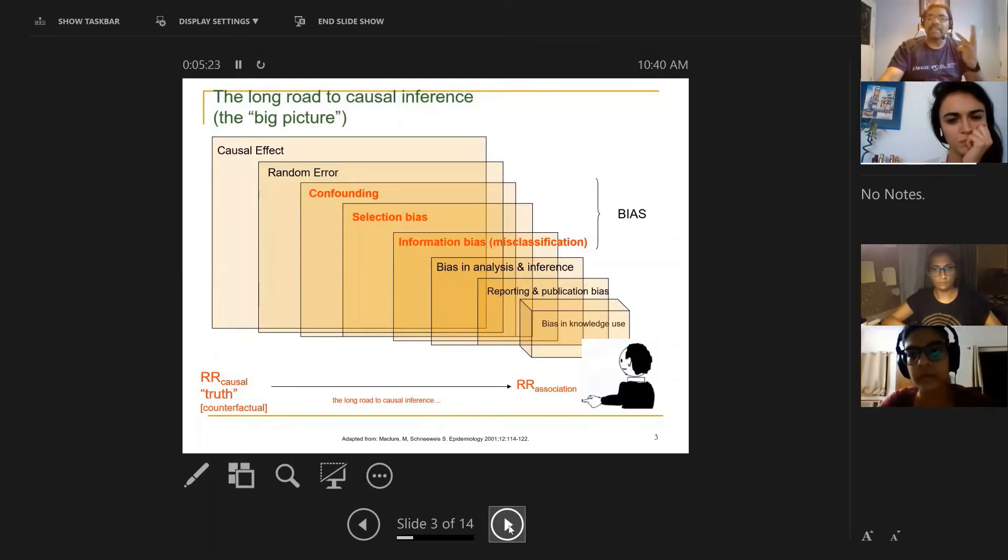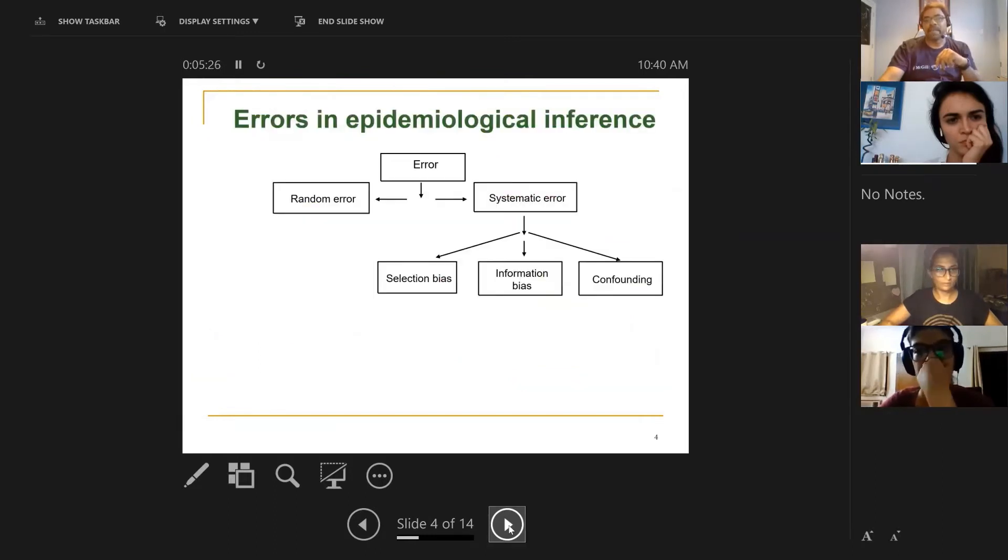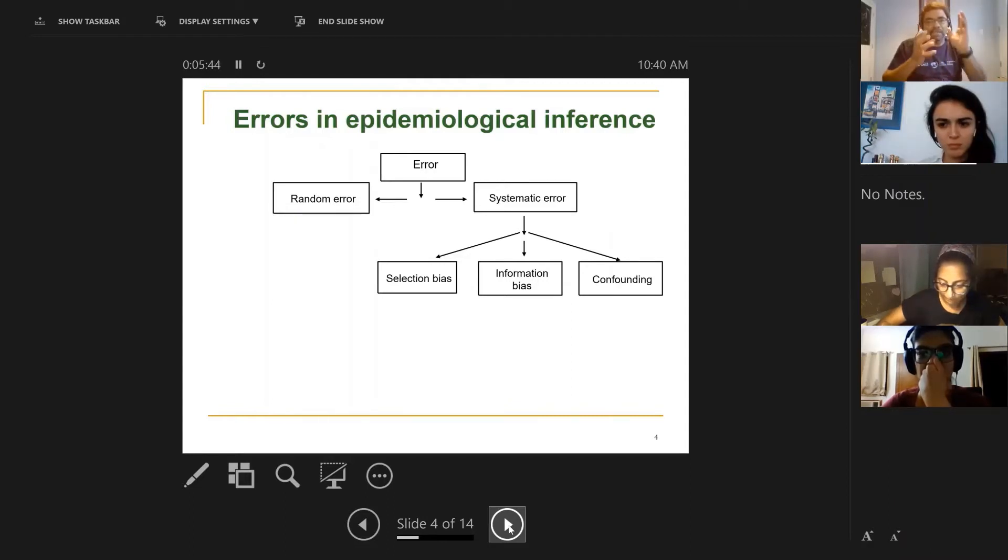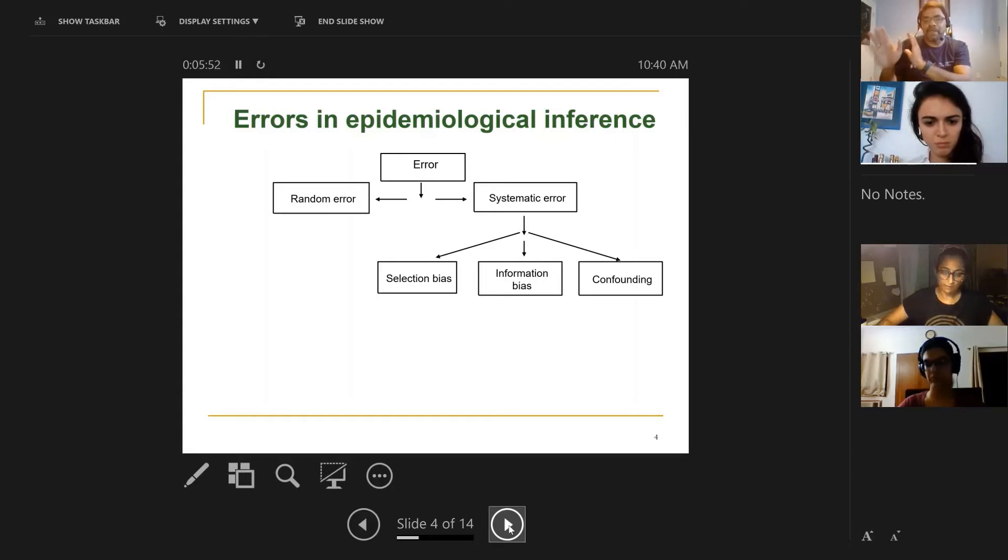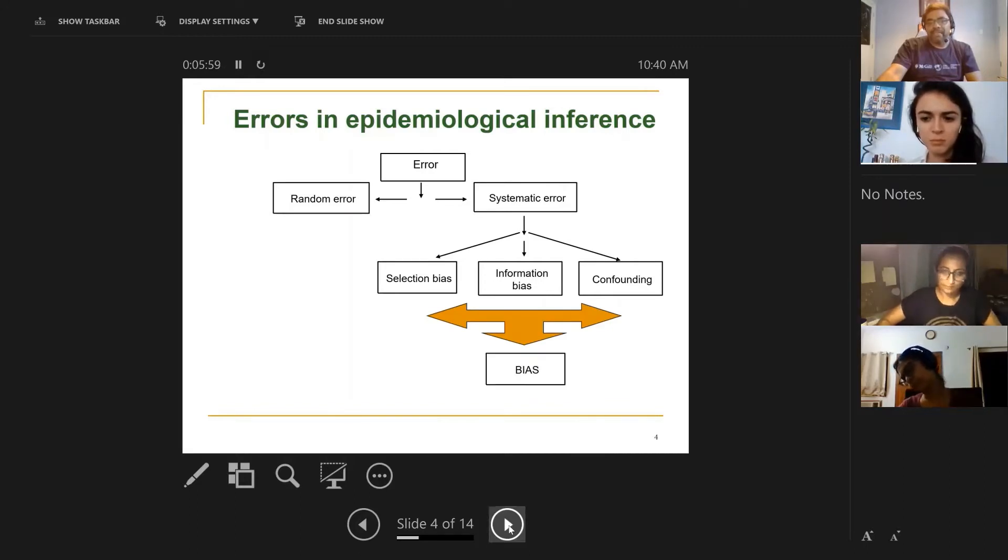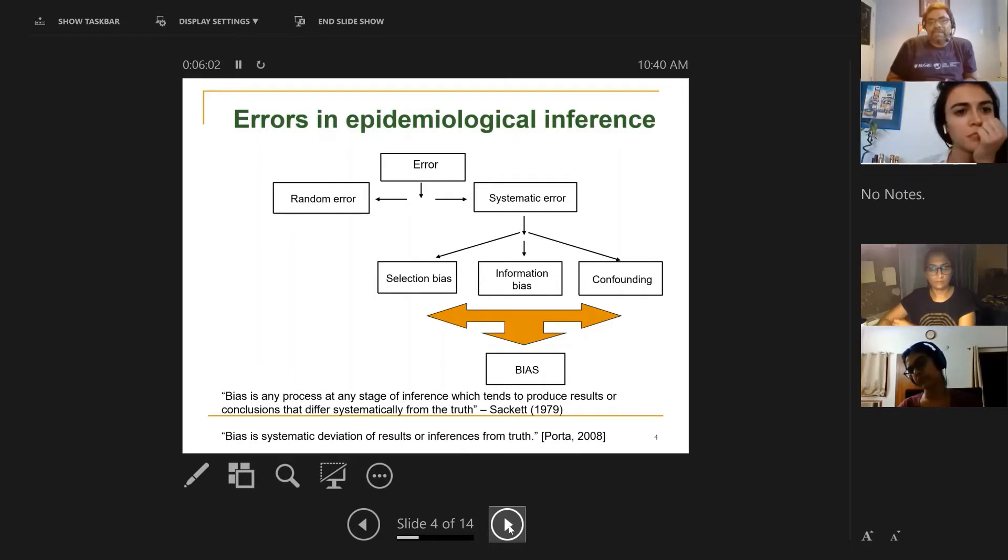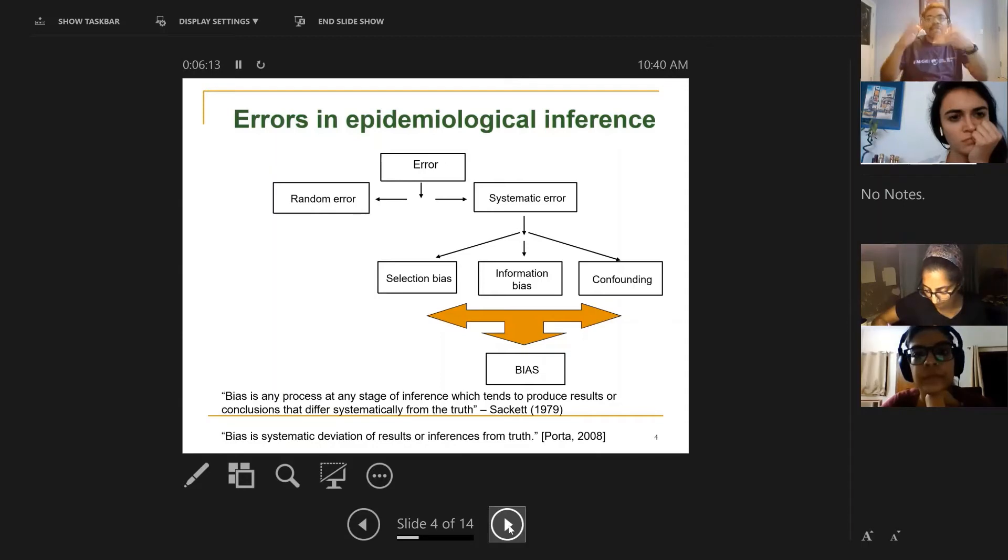Systematic error, which is confounding, selection bias, and information bias, will systematically push us towards some value or far away from that value. These three things make up the category in epidemiology that we call bias. There are two types of error: random error and systematic error. Systematic error is also called bias. What makes it systematic is that it can deliberately deviate us away from the truth. This is the classic definition for bias: systematic deviation of results from the truth.